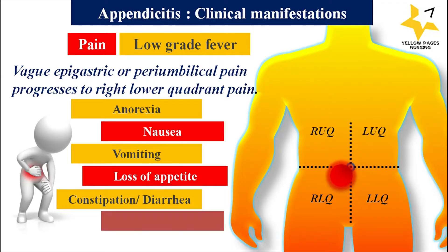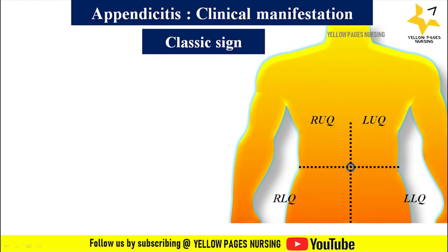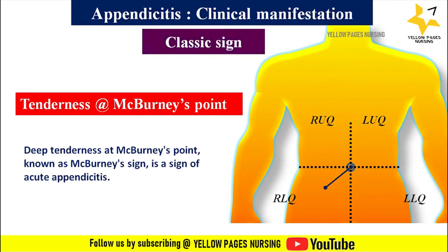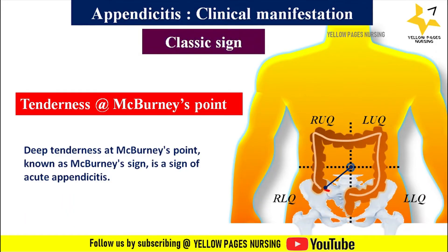Additional symptoms include constipation or diarrhea and flatulence. Now let's discuss the classical signs of appendicitis. First is tenderness at McBurney's point. Deep tenderness at McBurney's point, known as McBurney's sign, is a sign of acute appendicitis. McBurney's point is located one-third of the distance from the right anterior superior iliac spine to the umbilicus.